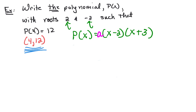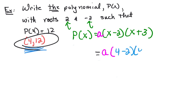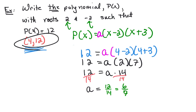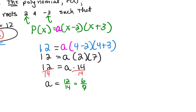To find a, substitute x equals 4 and set the result equal to 12: 12 equals a times 4 minus 2 times 4 plus 3, which is a times 2 times 7, giving 12 equals 14a. Dividing both sides by 14, a equals 12 over 14, which simplifies to 6/7.